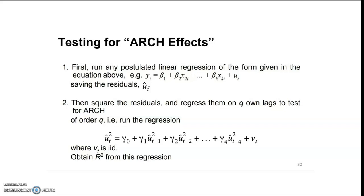Then we will square the residuals and regress them on q lags to test for ARCH of order q. That is, we will run the regression û²t = γ₀ + γ₁ût₋₁² + ... + γₑût₋ₑ² + vt, where vt is independent and identically distributed.